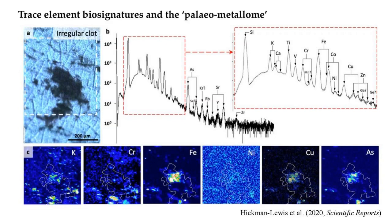In addition to microbial mats, there is also abundant carbonaceous material in the form of clots in the same horizons. Paleoarchaean organic materials in fossil-bearing horizons also contain trace element signatures which could reflect the nature of their original biomass. In a Scientific Reports article from earlier this year, we reported trace elements — particularly transition metals — that are preserved and enriched in Archaean organic materials relative to the matrix.